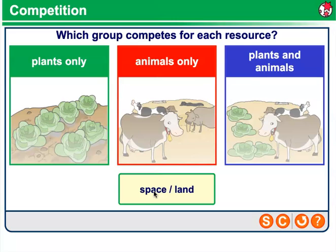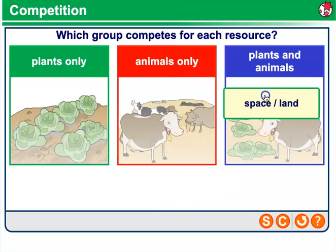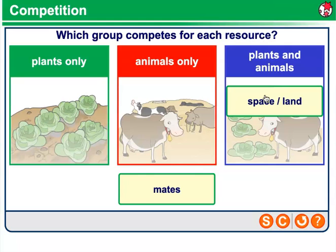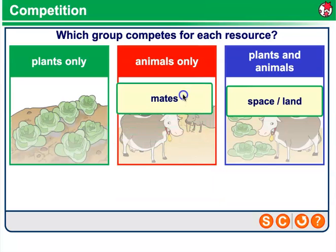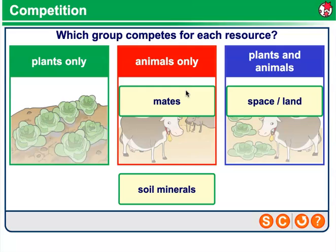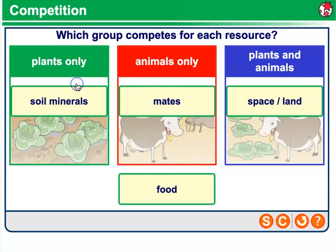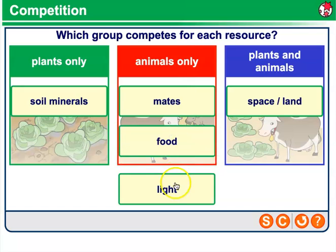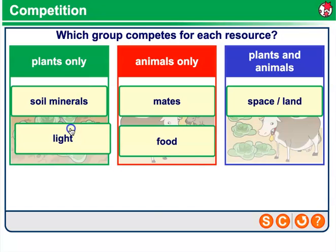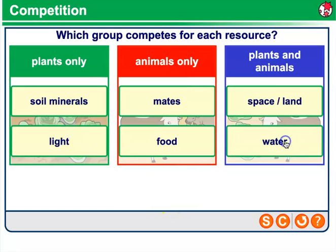Looking more in depth at this idea of competition — which group competes for each resource? Space and land: both plants and animals are going to compete for space and land. For mates: animals only, though in general it may also occur with plants. Soil minerals are competed for by plants. Food resources are competed for by animals. Light is going to be plants. And water: both plants and animals.